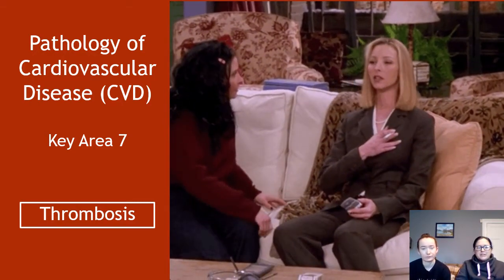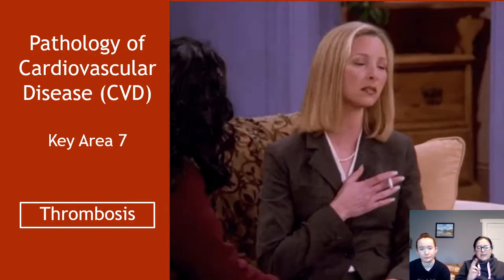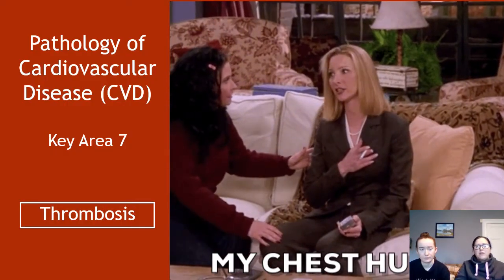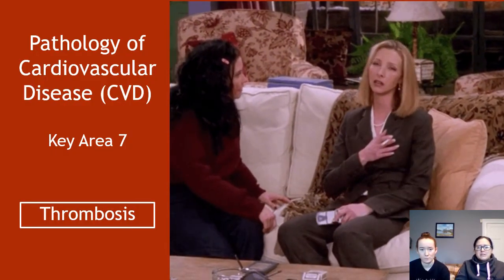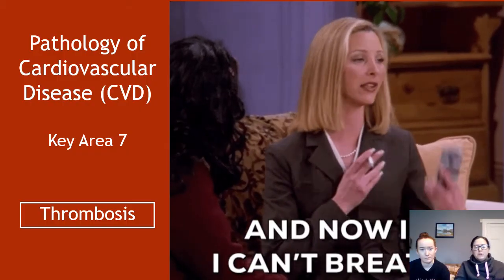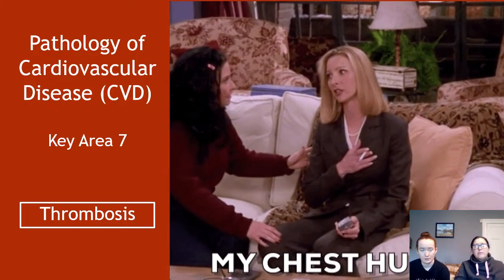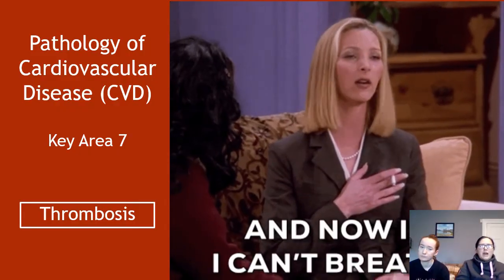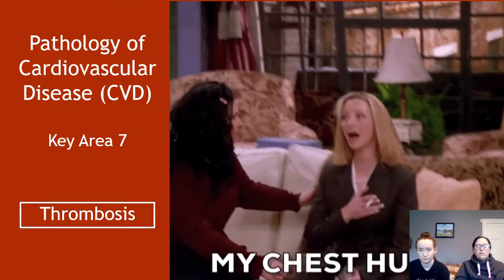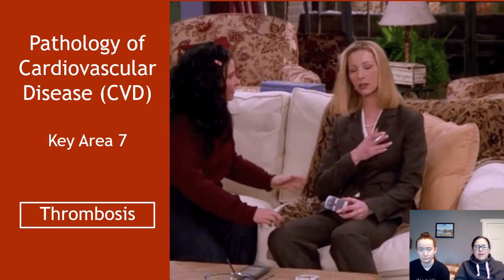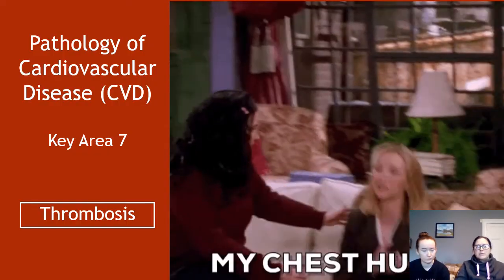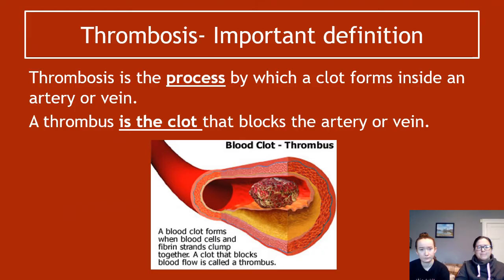We're still in key area seven of unit two of Higher Human Biology, pathology of cardiovascular disease. This time we're looking at thrombosis. The previous video was on atherosclerosis, and we looked at the idea that sometimes the atheroma can get so large that the lumen cannot allow blood to pass through it, and the blood clots to form a thrombus. We'll be investigating that process a little bit more here.